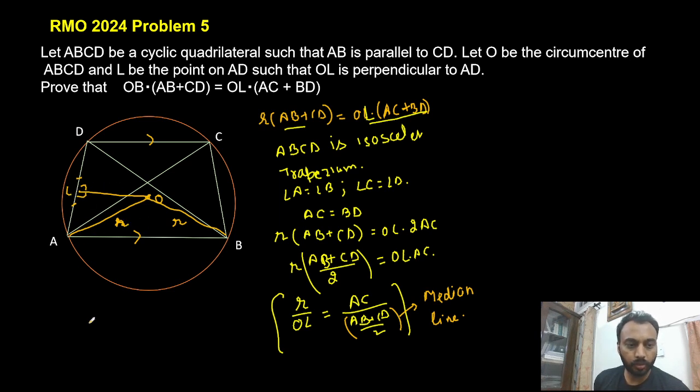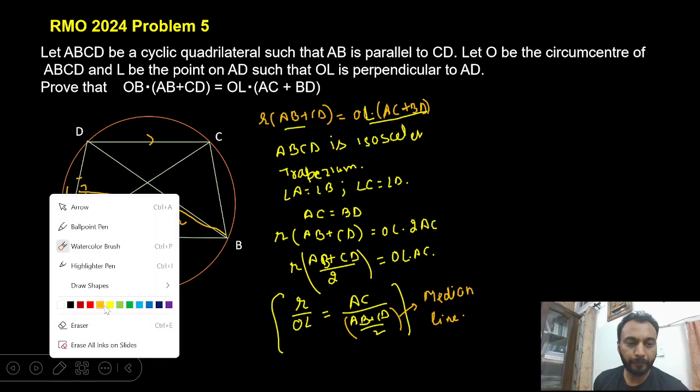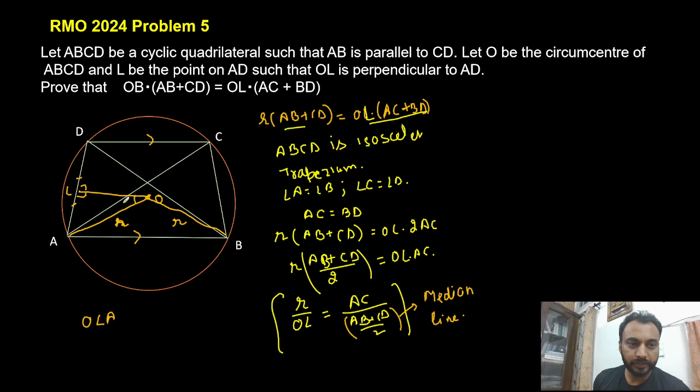In triangle OLA we have OL as well as R and if I assume this angle is theta then other part also makes an angle theta. Then angle ACD is theta because angle AOD is 2 theta then angle ACD is theta.